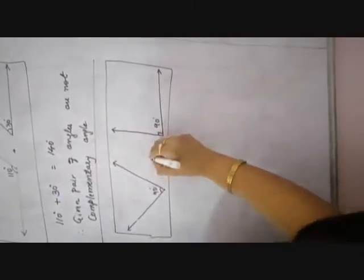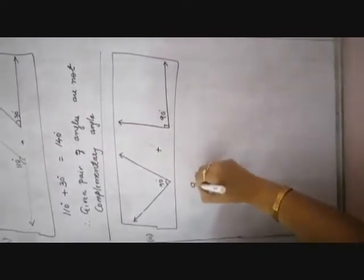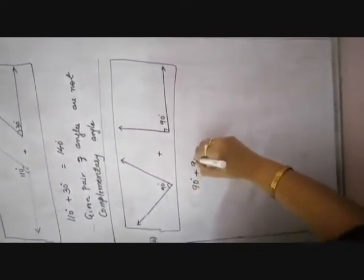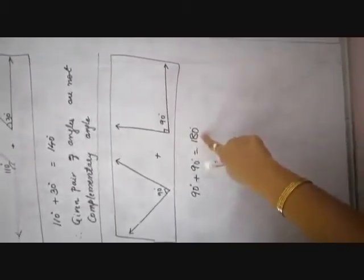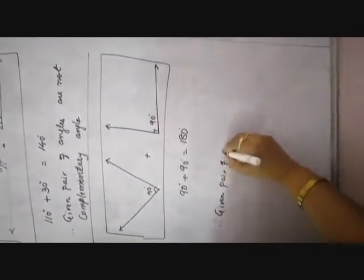In the second box, one angle is 90 degrees and the other is also 90 degrees. When you add them, you get 180 degrees, which is not equal to 90 degrees. Therefore, the given pair of angles are not complementary angles — they are equal to 180 degrees, so they are supplementary. For the next exercise we will do supplementary angles.